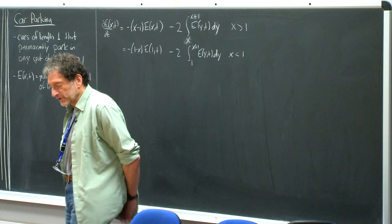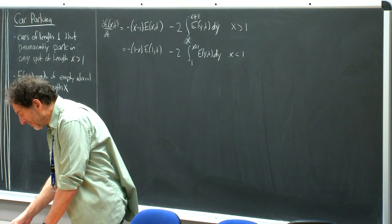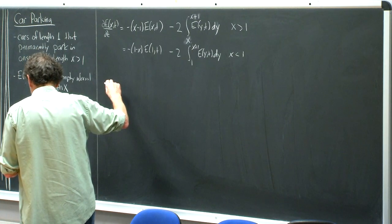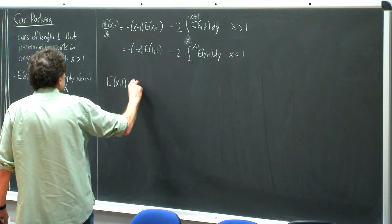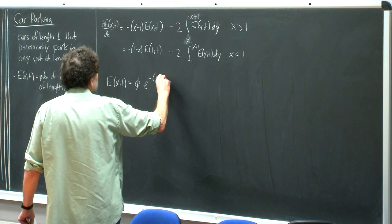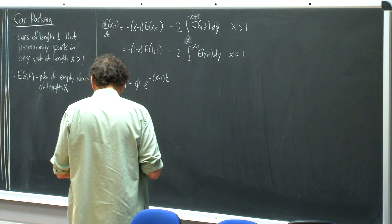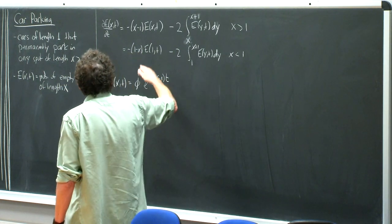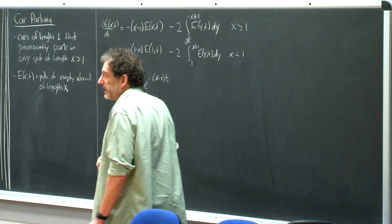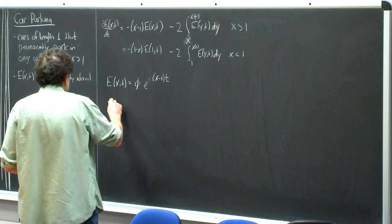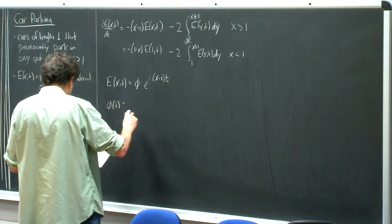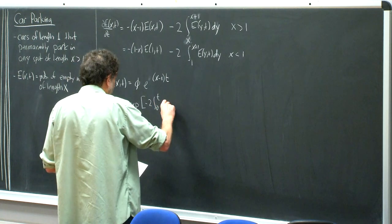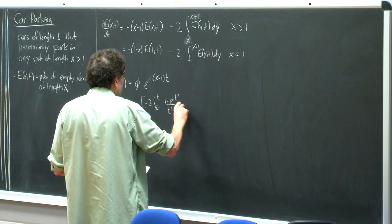We used the same trick of solving these equations by first focusing on the top equation and introducing the substitution E(x,t) = φ · e^(-(x-1)t). Plugging this ansatz in gives a simple equation for φ, and what we found last time was φ(t) = exp( -2 · integral from 0 to t of (1 - e^(-t'))/t' dt' ).